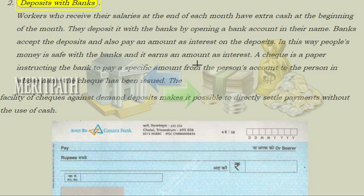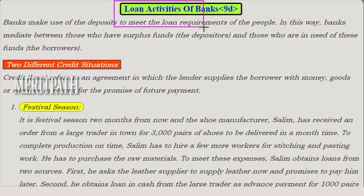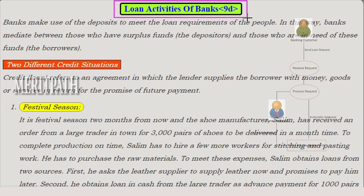A check is a paper instructing the bank to pay a specific amount from the person's account to the person in whose name the check has been issued. The facility of checks against demand deposits makes it possible to directly settle payments without the use of cash. On a check, the payee's name, the amount in words and numbers, the account number, the date, and the person's signature are all written.